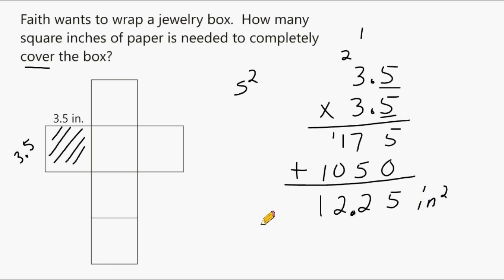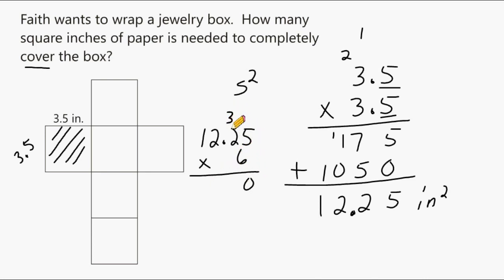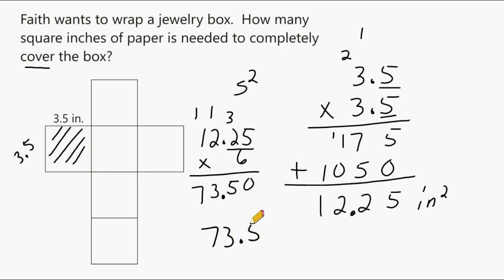We're not complete with this problem yet. We have to take 12.25 and multiply it by 6, because a cube has 6 faces or surfaces that are identical to each other. So 6 times 5 is 30; 6 times 2 is 12 plus 5 is 17; 6 times 2 is 12 plus 1 is 13; and 6 times 1 is 6 plus 1 is 7. In this problem we have two numbers after the decimal point, so we go to the end and move left two spaces. The surface area of this cube is 73.5 square inches. Remember, after any decimal point, if you have zeros at the end, you can simply get rid of those zeros.